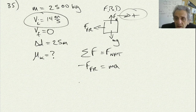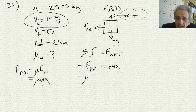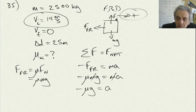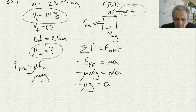I put negative on friction because it's acting in the negative direction. Substituting the friction equation: negative μ · mg equals ma. Notice a lovely simplification — the mass cancels out. So I get: negative μg equals a. Now, I'm looking for μk, but I don't have the acceleration yet. So I need to cross the bridge from dynamics into kinematics.